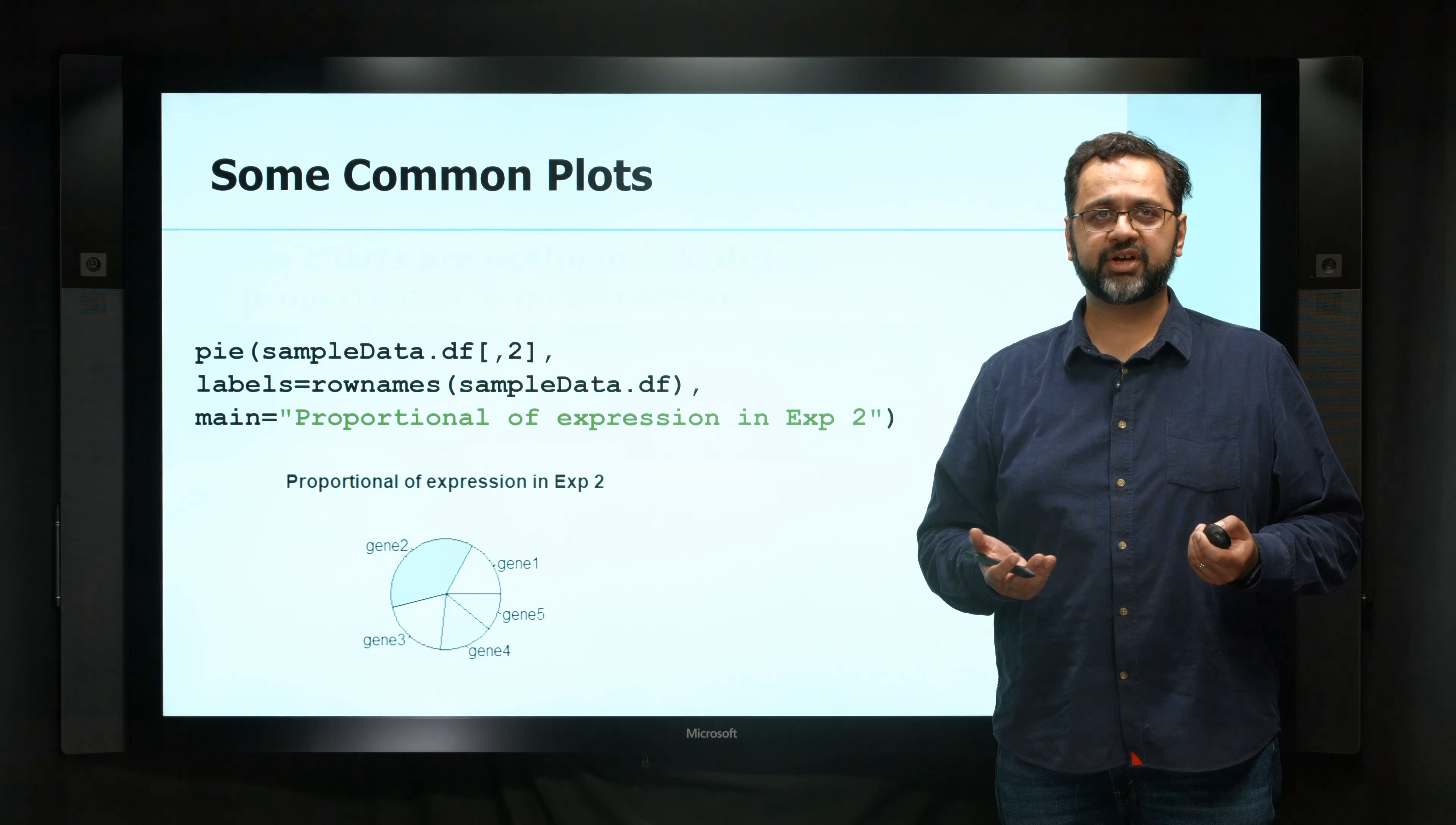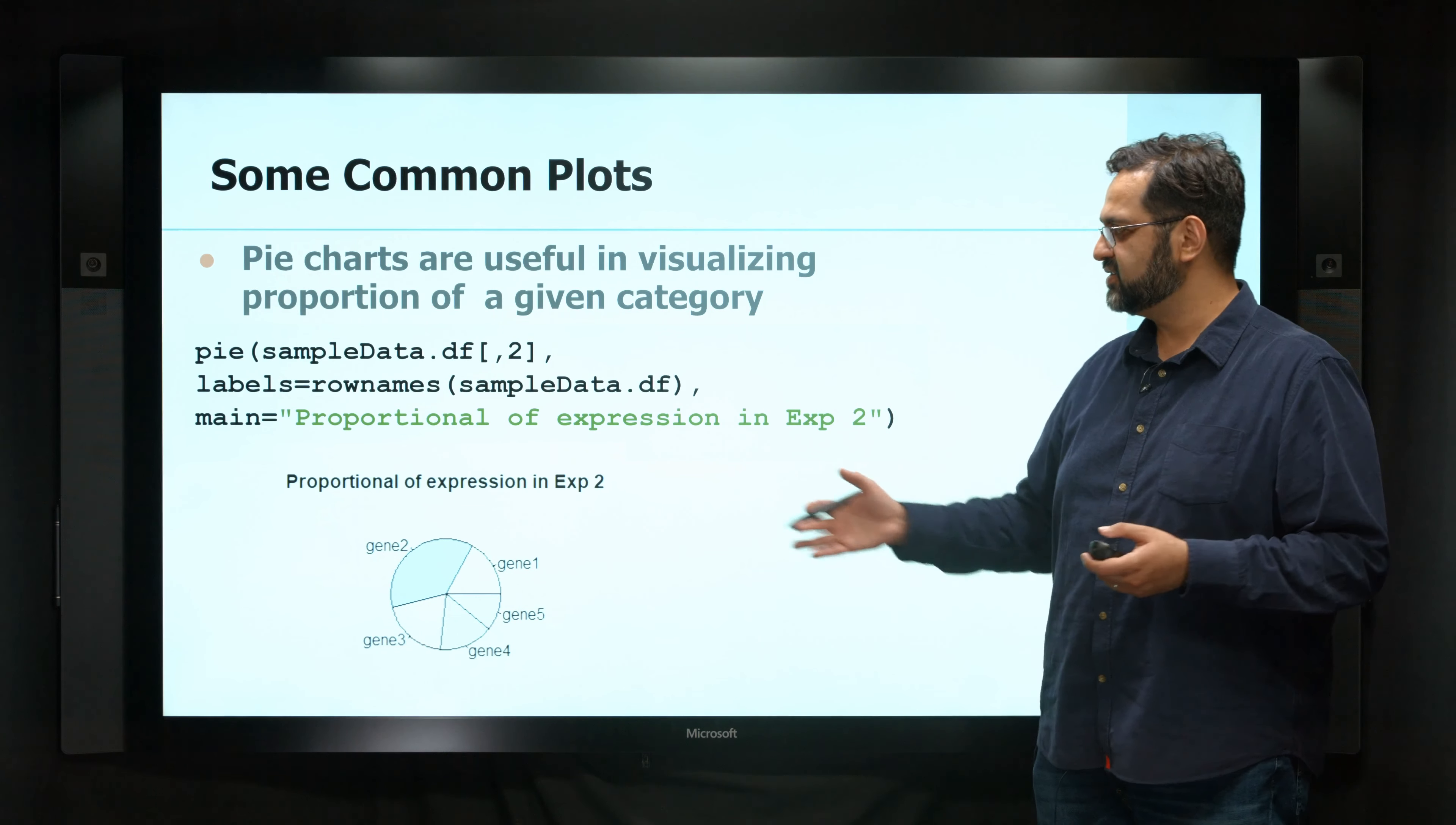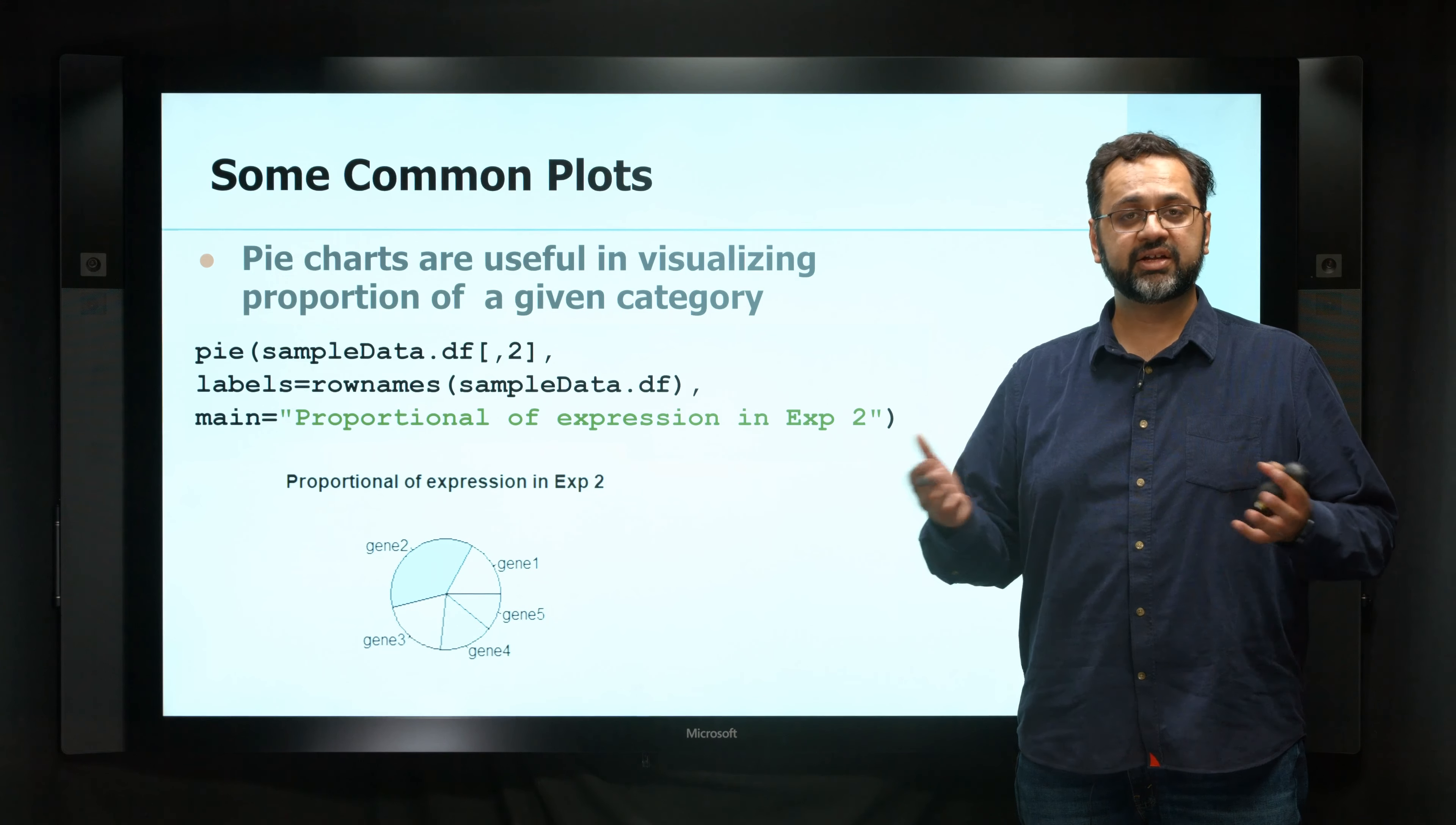So one is a pie chart. This is very helpful in visualizing a proportion of a given category. In this case, a really simple thing might be what's the proportion of the intensities of the different genes in a given experiment?